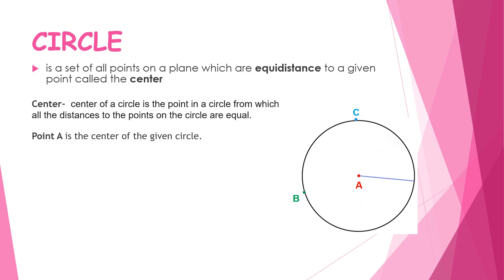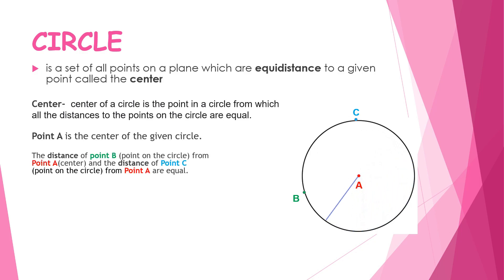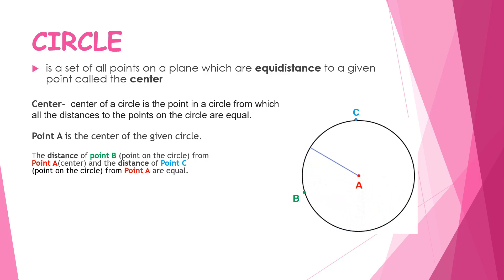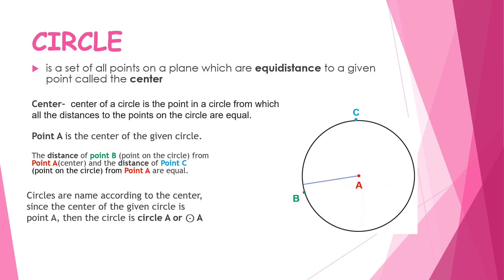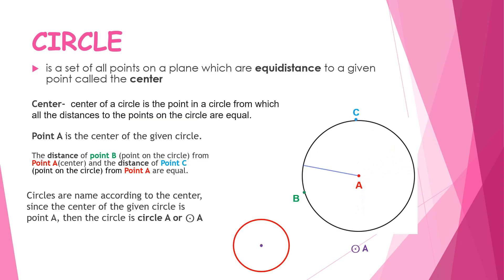Point A is the center of the circle. The distance from point B, which is on the circle, to point A, the center, equals the distance from point C to point A. Circles are named according to their center, so since the center is point A, the circle is called Circle A.